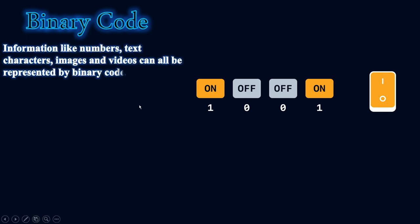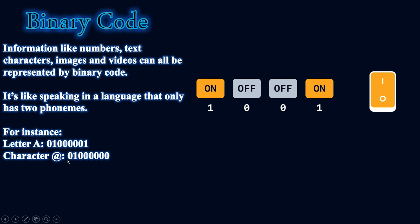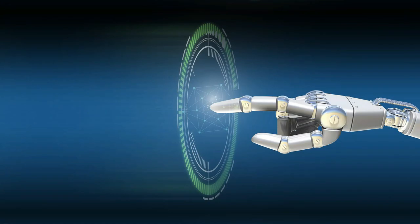Information like numbers, text characters, images, and videos can all be represented by binary code — it's like a language that only has two letters, or two phonemes. For instance, the capital letter A is represented in binary as 01000001, and the @ character is a different binary number. You don't need to understand binary code to become a coder.